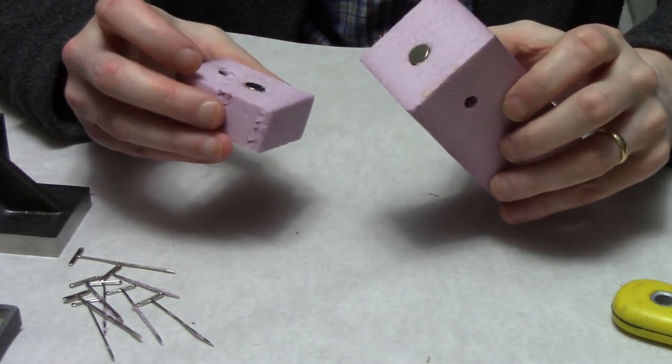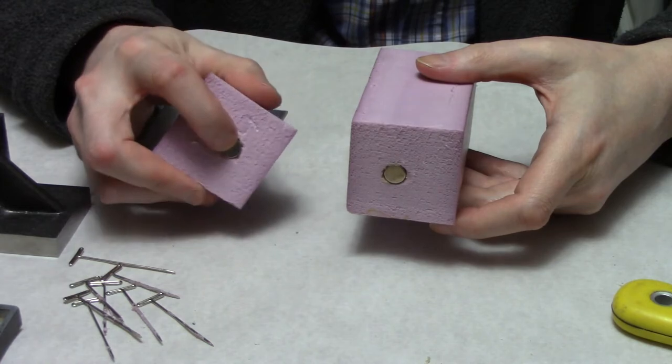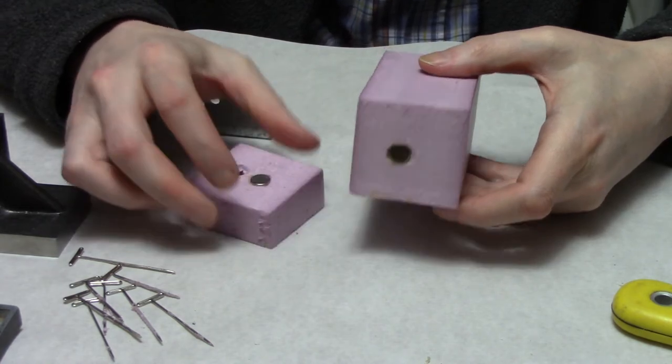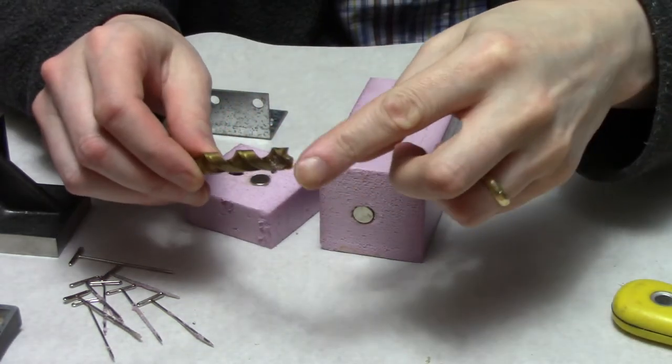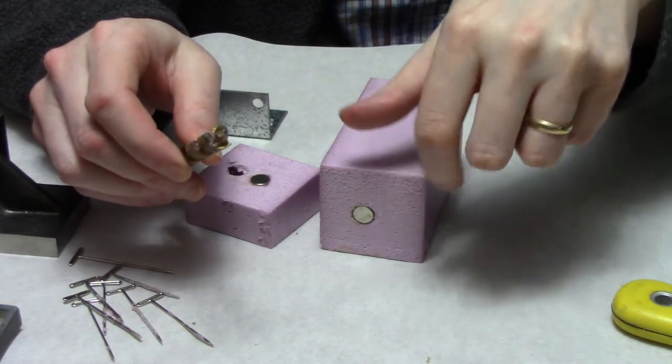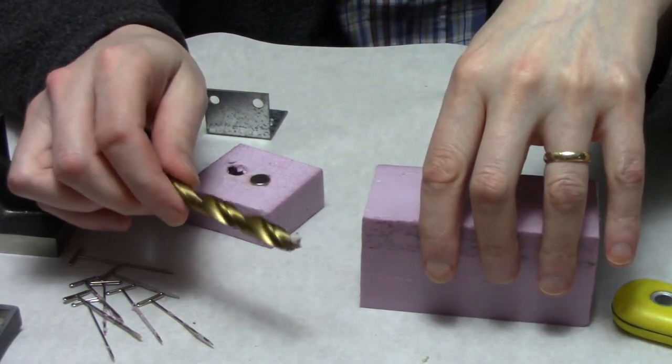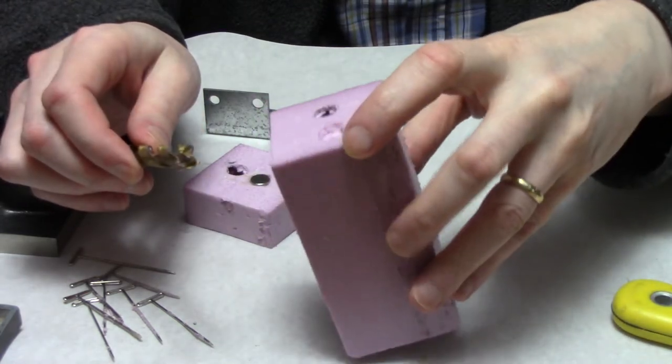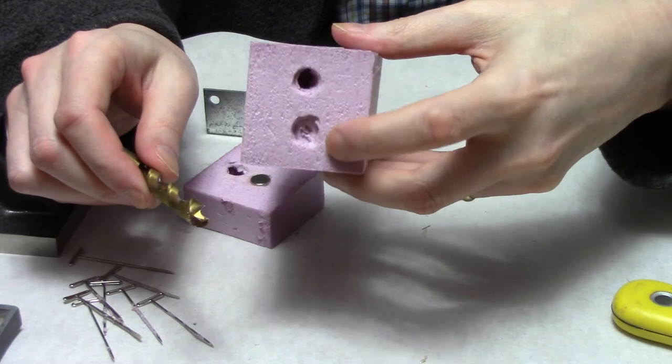I drilled a 25-64 hole in the foam and that's just using a brad point bit and just enough to sink in past the depth of the magnet as you can see on this side right here.